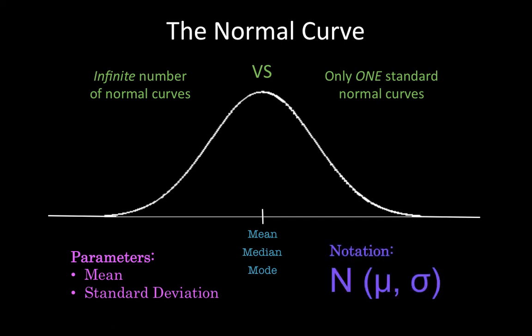And the notation for a normal curve is N (μ, σ), which means the N stands for normal curve, μ is the mean, and σ is the standard deviation.